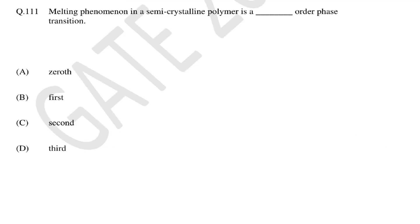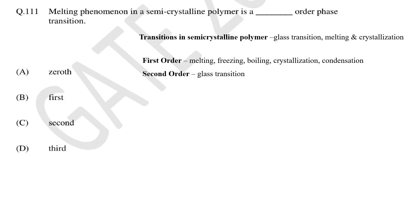In this question you need to tell the thermodynamic order of melting phenomena in semi-crystalline polymer. A semi-crystalline polymer shows three thermodynamic transitions: glass transition, melting and crystallization. Thermodynamic transitions in polymers are divided into first and second order transitions.